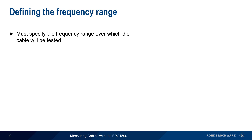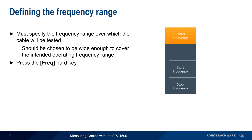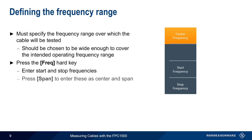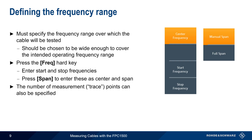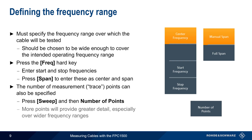We also need to specify the frequency range over which the cable will be tested. This should cover the intended operating frequency range. To define the frequency range, press the Frequency hard key and enter the Start and Stop frequencies. The Span key can also be used to enter these as Center and Span instead. The number of measurement or trace points over the span can also be specified by pressing the Sweep hard key and then adjusting the number of points. A greater number of points will provide greater detail, particularly over wide frequency ranges.